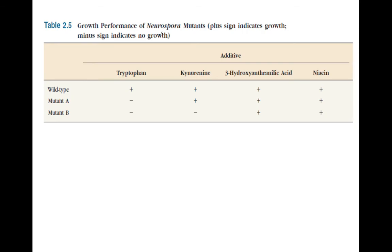Here is the example with Neurospora mutants. A plus sign indicates growth and a minus sign indicates no growth. There are two mutants, A and B. The wild type will grow in all conditions — whether you add tryptophan, kynurenine, 3-hydroxyanthranilic acid, or niacin.